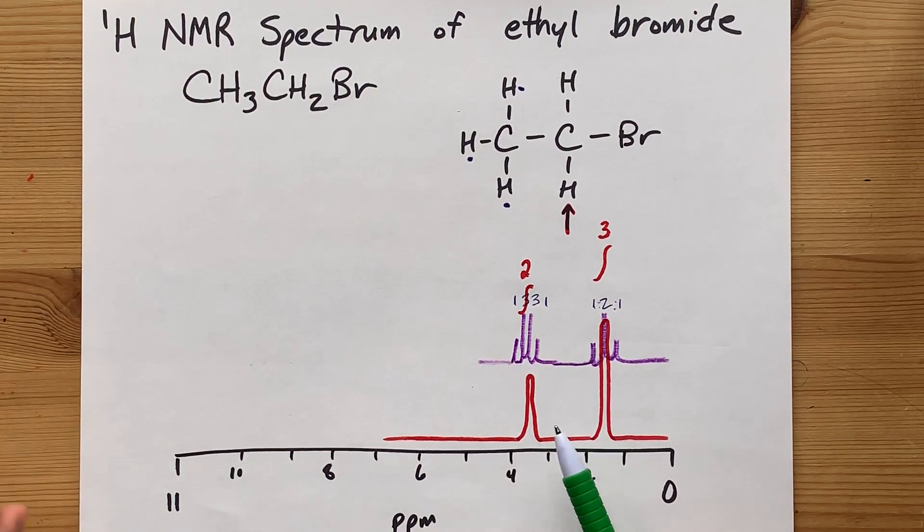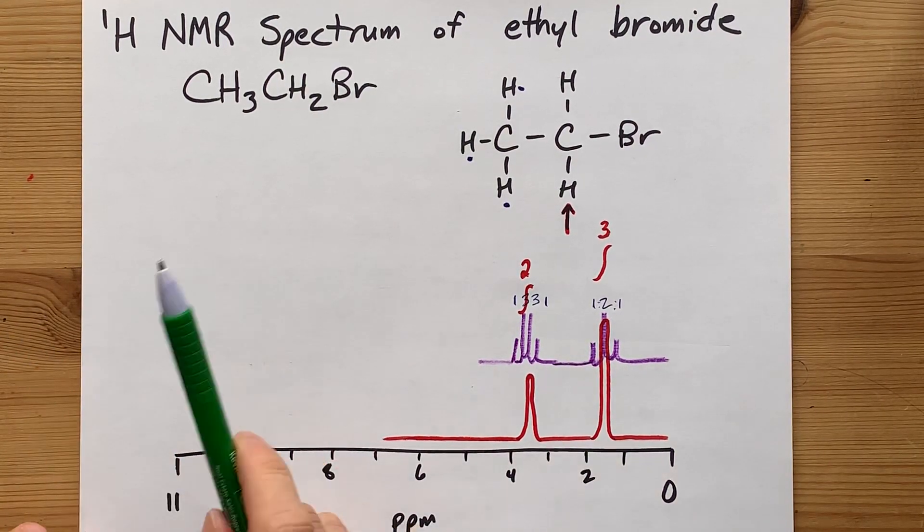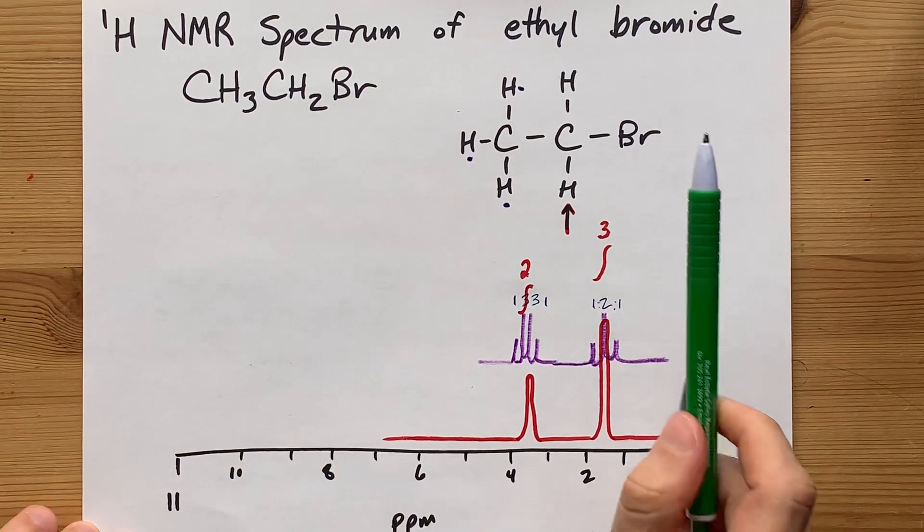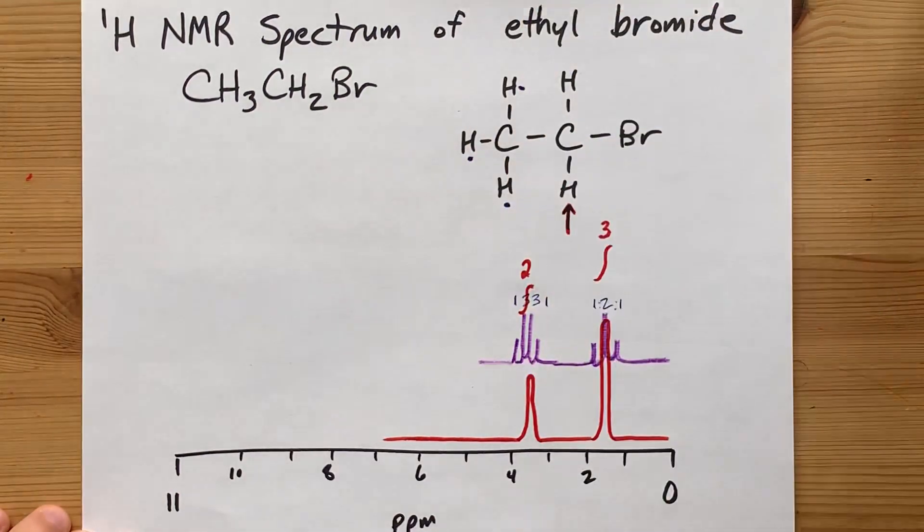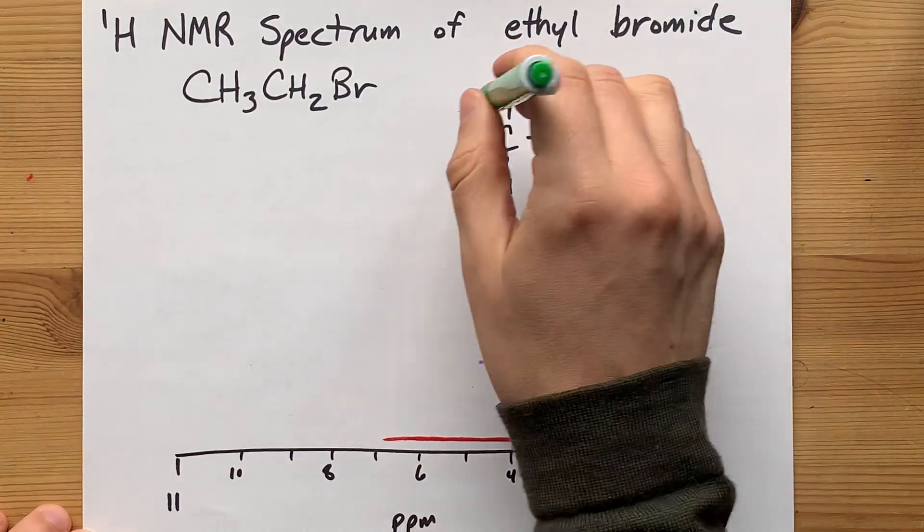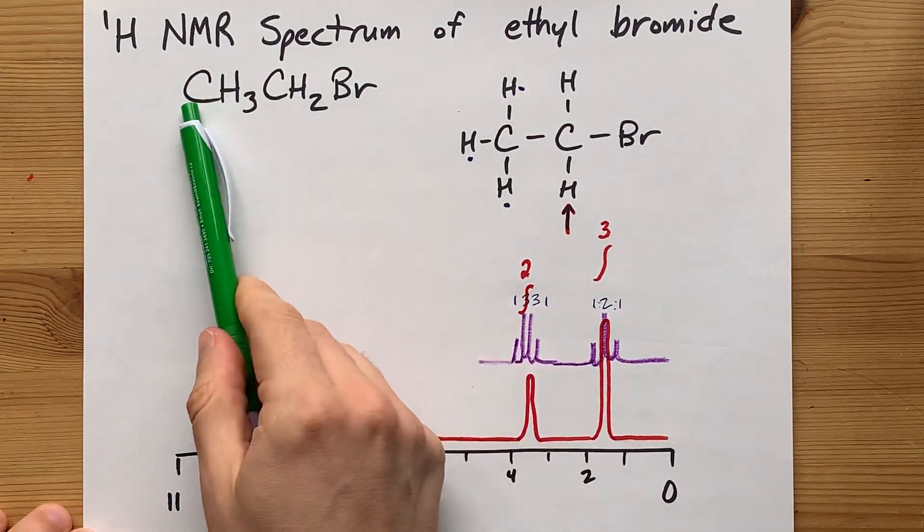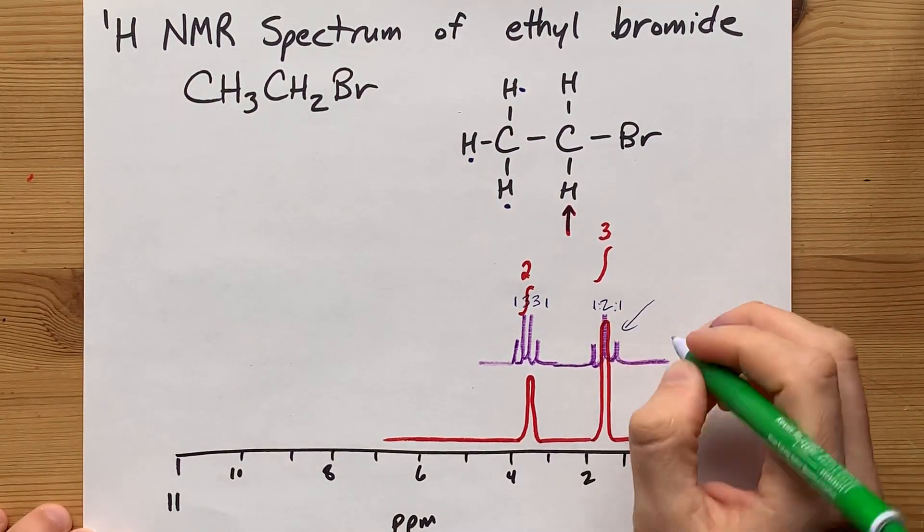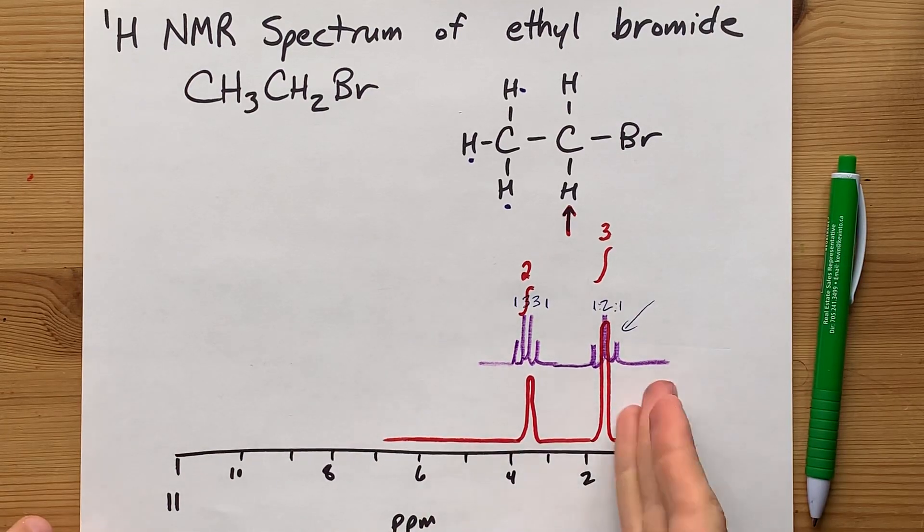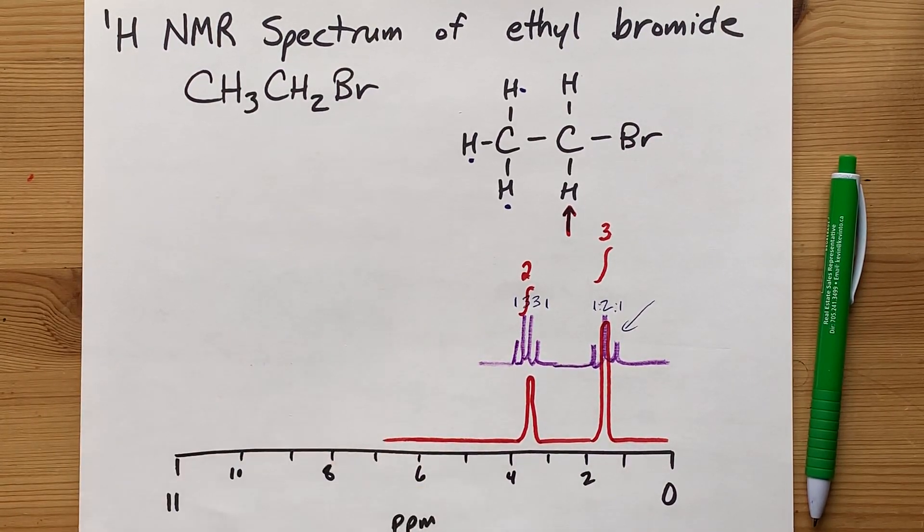Cool. So, there we are. We've got two spectrums, low-resolution and high-resolution NMR for ethyl bromide. Two types of hydrogen. Each one split uniquely. If you're being asked this question, your teacher probably wants the splitting pattern. It's what makes this interesting and all. Best of luck.